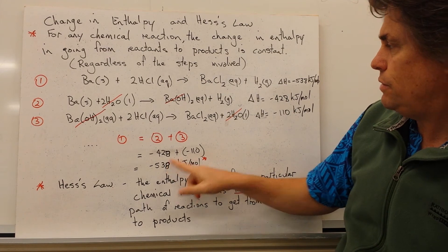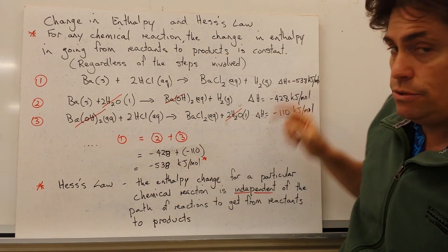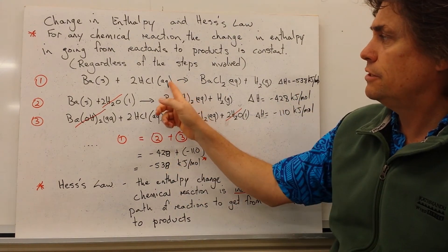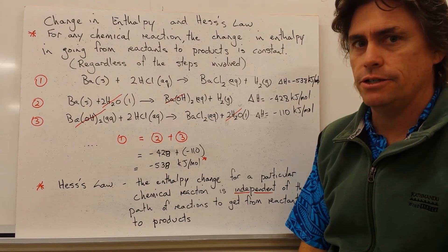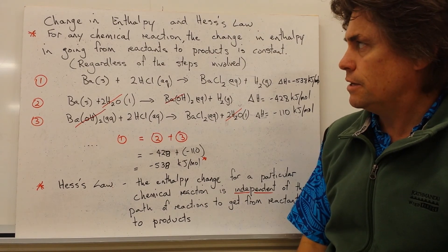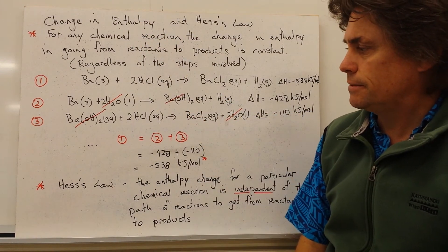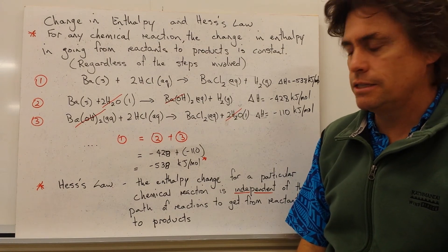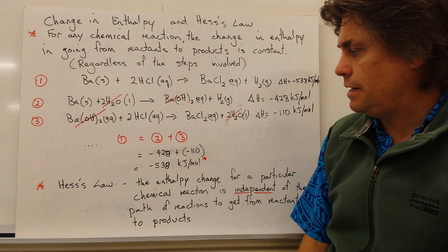So if this stands, this value here should be equal to, and it is equal to, the change in enthalpy for our first reaction. So this, what we've set up here, is correct. And this is known as Hess's law.